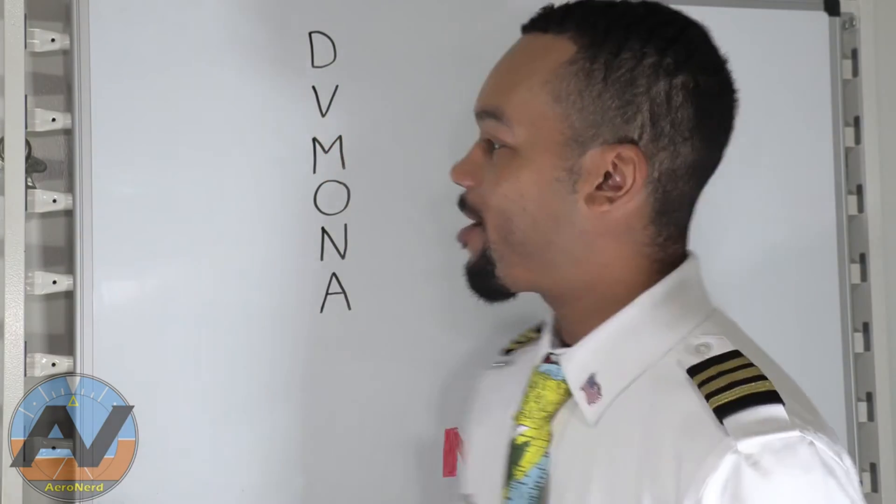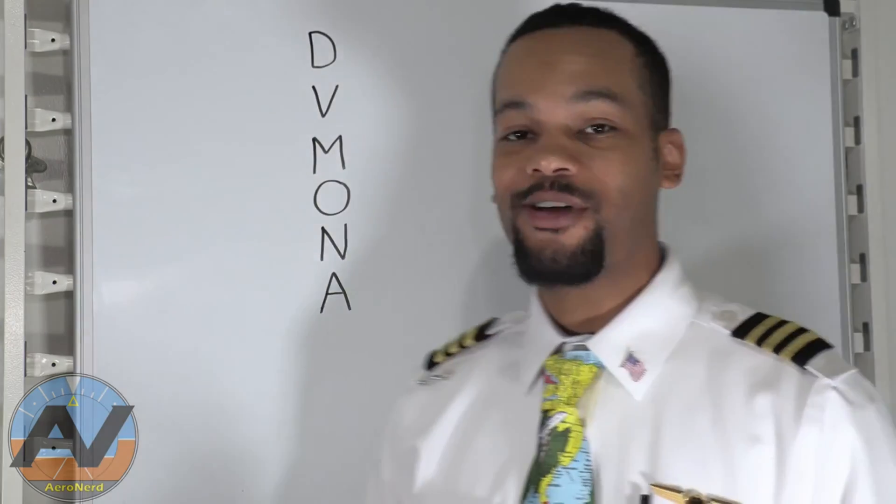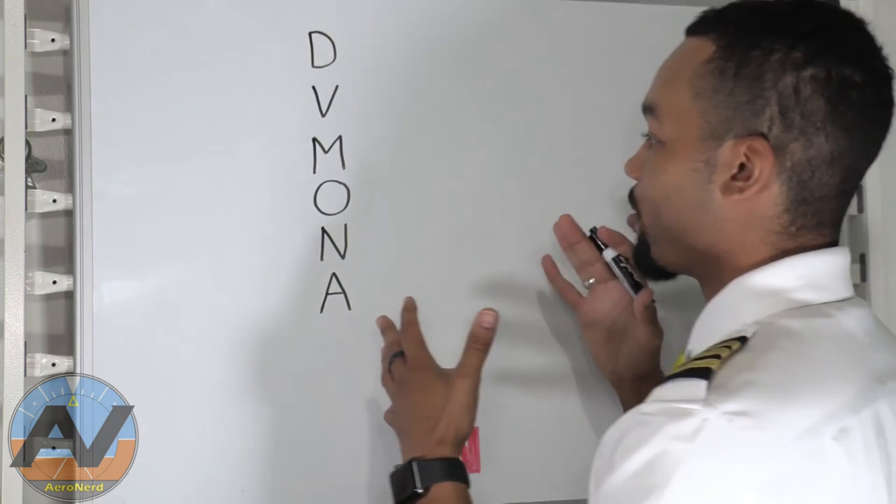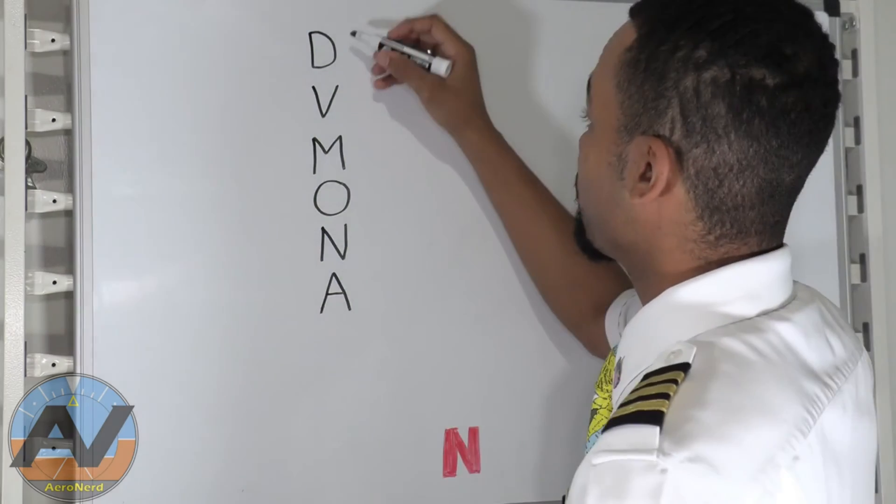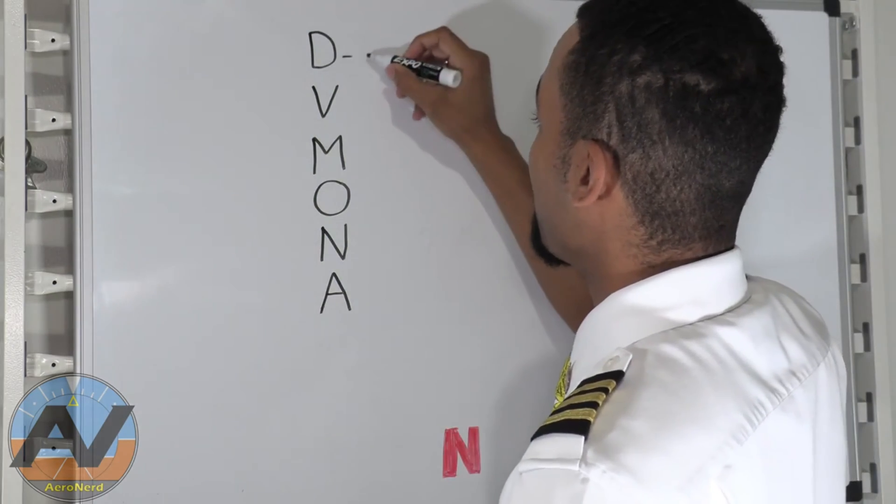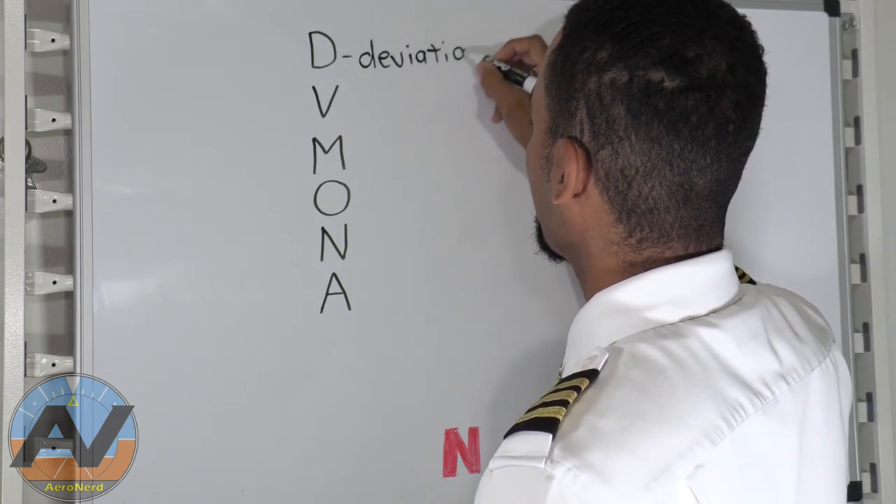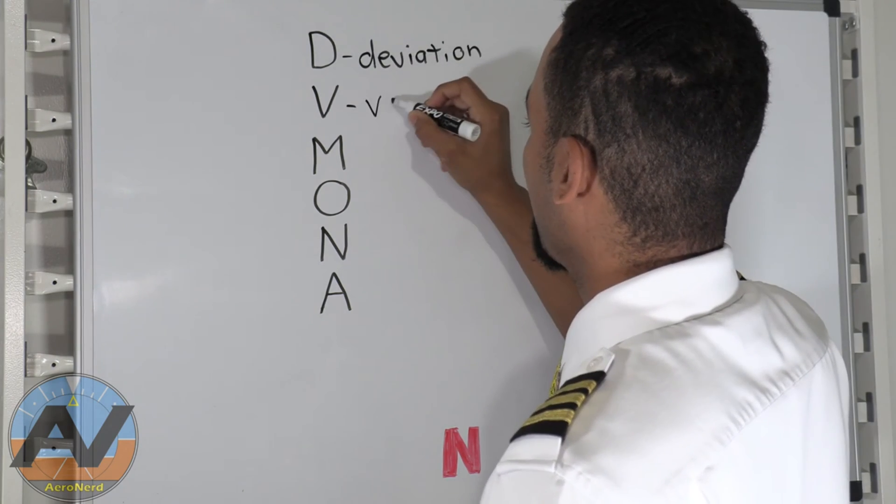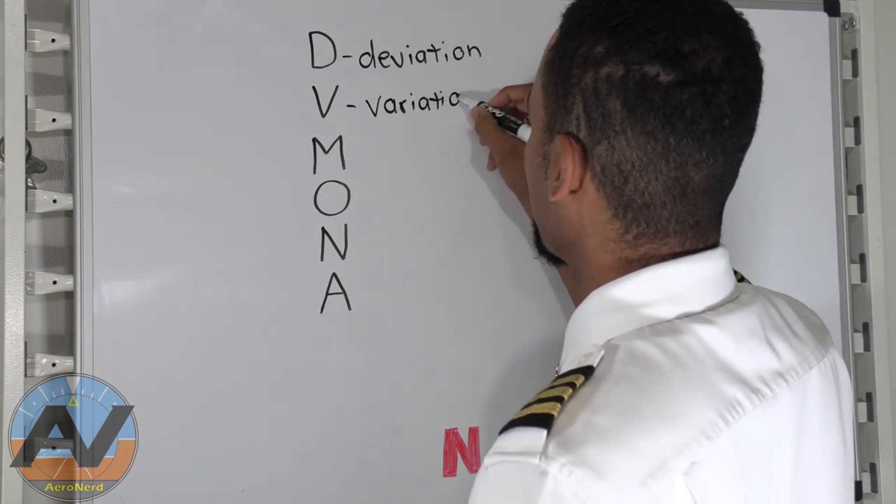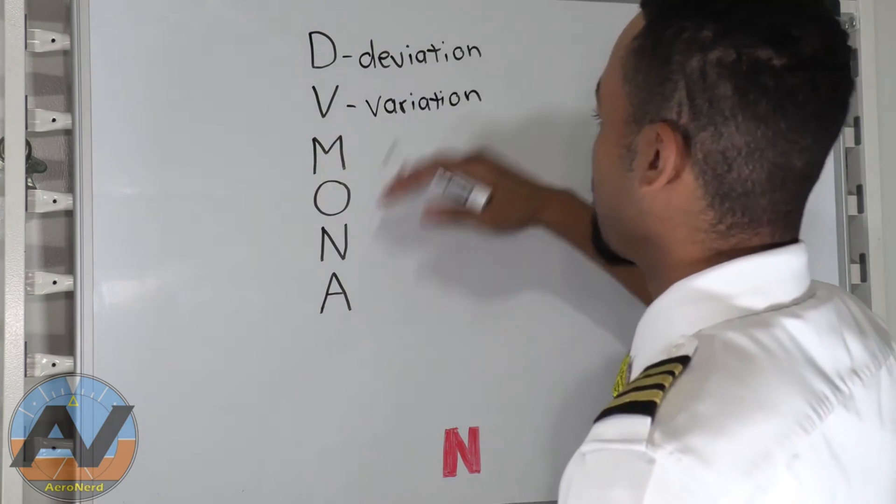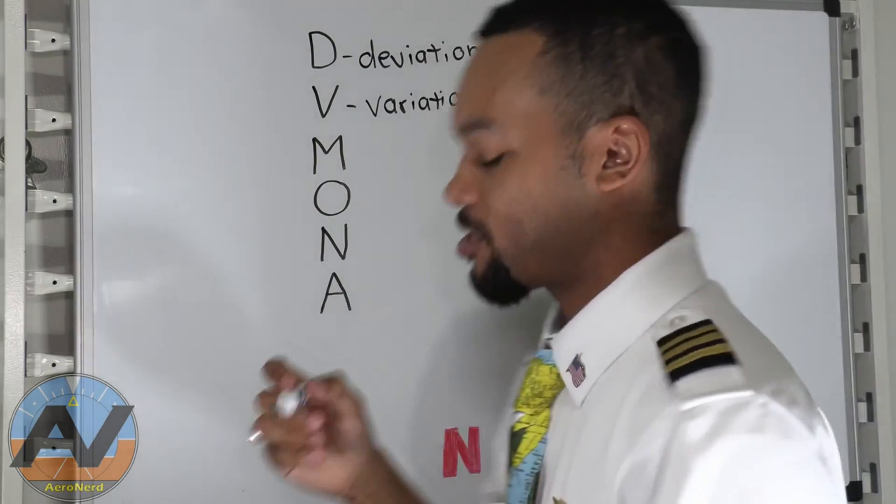We're going to be talking about the compass errors. Now you may recognize this acronym right here, DVMONA. There are many other acronyms, but this is the one I use. So this is the one we're going to use today. So D is for deviation,